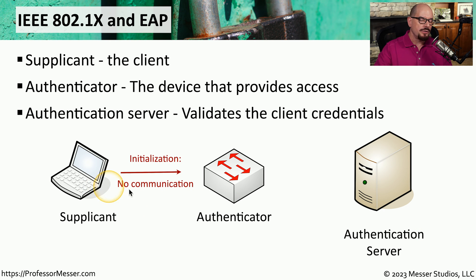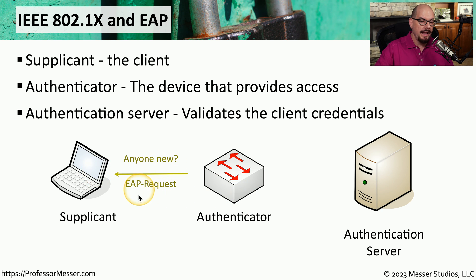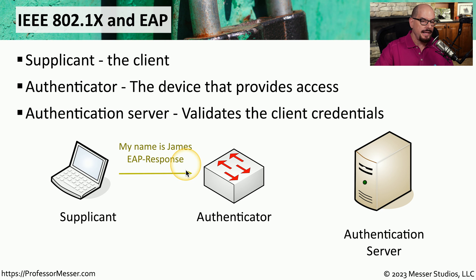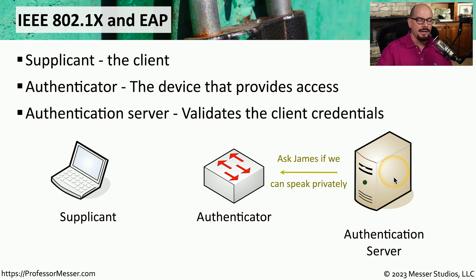When the supplicant first connects to the network, there's no authentication, and the authenticator will not allow any access until authentication is complete. Once the authenticator sees this initialization, it sends a message back to the supplicant asking for login credentials — we refer to this request as the EAP request. The supplicant provides an EAP response with the name of the device trying to access the network, and that request is passed from the authenticator to the authentication server.